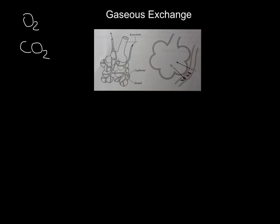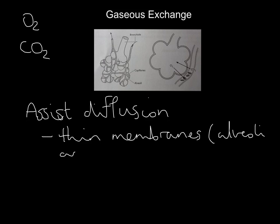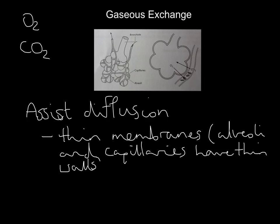How is this system designed to assist diffusion? There are three main ways. Number one: thin membranes. The alveoli and the capillaries have very thin walls, meaning gases can easily diffuse from one into the other. That's one way the lungs are designed to help diffusion.